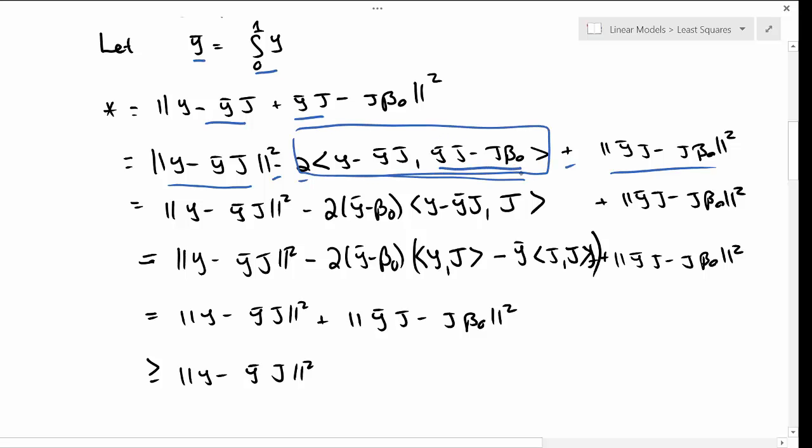This component has y bar j minus j beta_0. Y bar and beta_0 are both scalars so I can pull them out and I get inner product y minus y bar j times j. Y bar is a scalar, so pulling y bar out, and the inner product of j with itself.